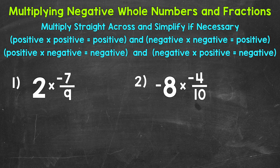Let's jump into our examples, starting with number one, where we have two times negative seven ninths. We need to multiply straight across. So what we need to do with the two is put it in fractional form — two over one — so we have a numerator and a denominator and we can multiply straight across.